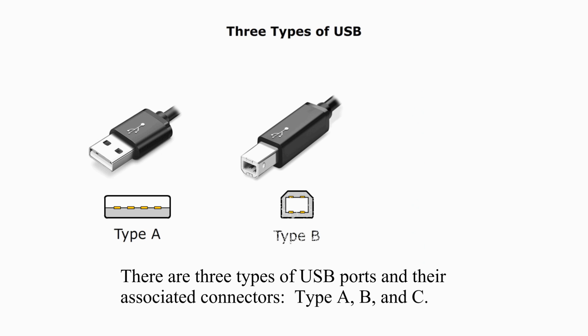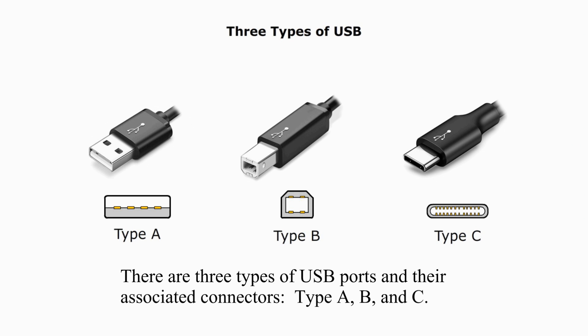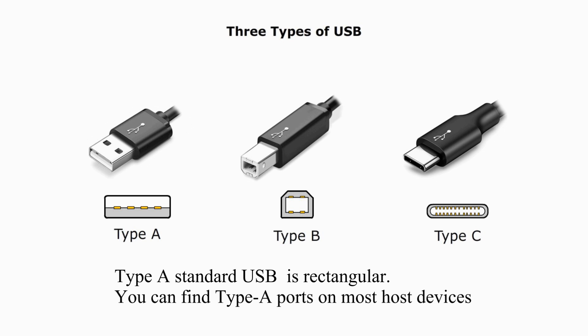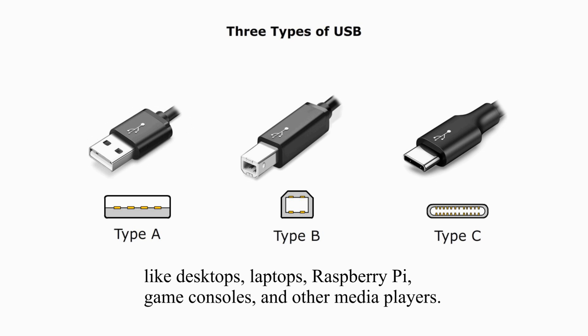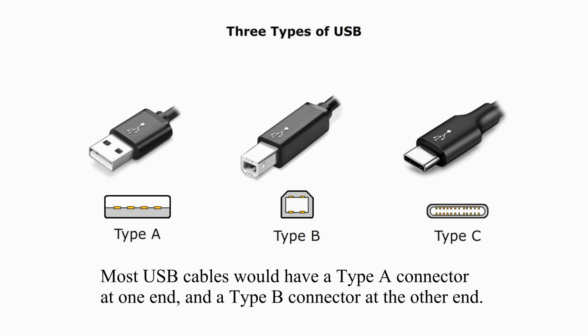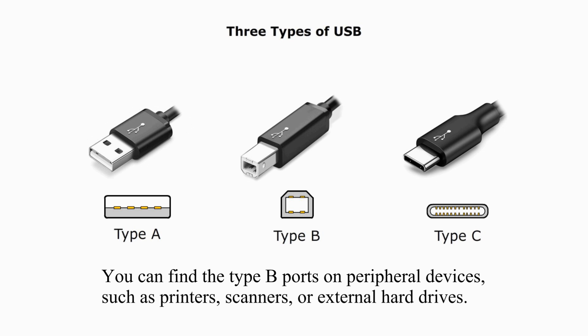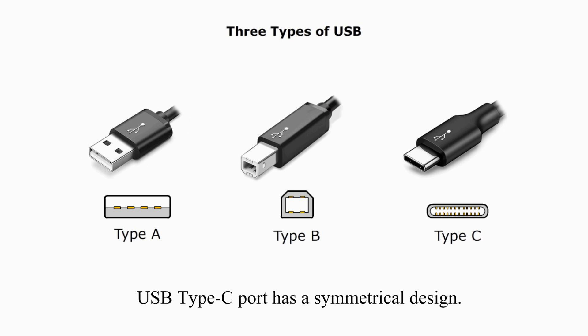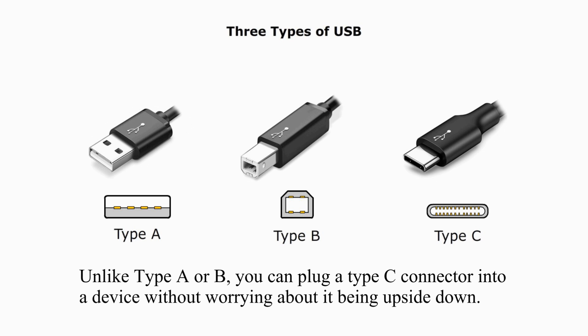There are three types of USB ports and their associated connectors: Type A, B, and C. Type A standard USB is rectangular. You can find Type A ports on most host devices like desktops, laptops, Raspberry Pi, game consoles, and other media players. Most USB keyboards would have a Type A connector at one end and a Type B connector at the other end. You can find Type B ports on peripheral devices such as printers, scanners, or external hard drives. USB Type C port has a symmetrical design. Unlike Type A or B, you can plug a Type C connector into a device without worrying about it being upside down.